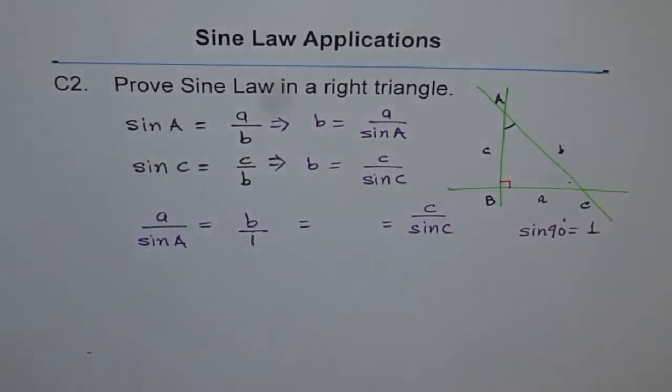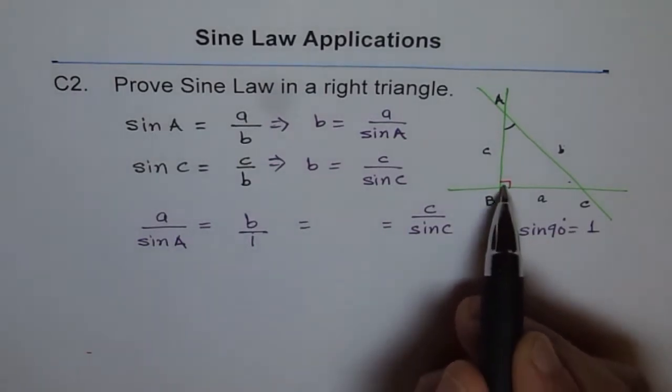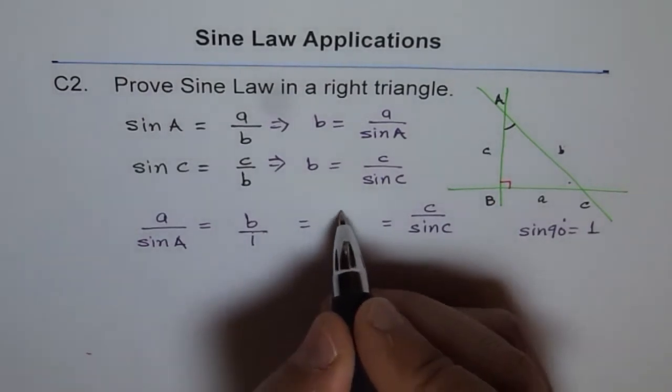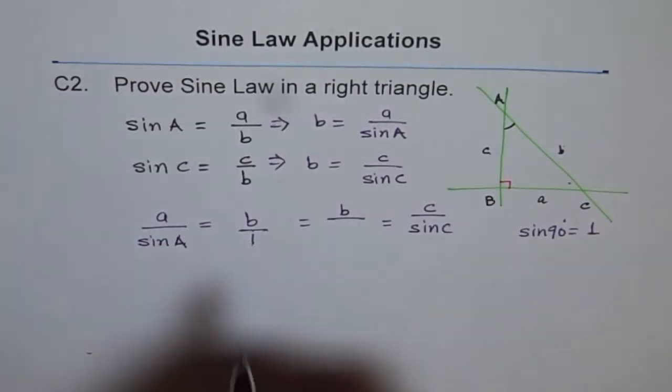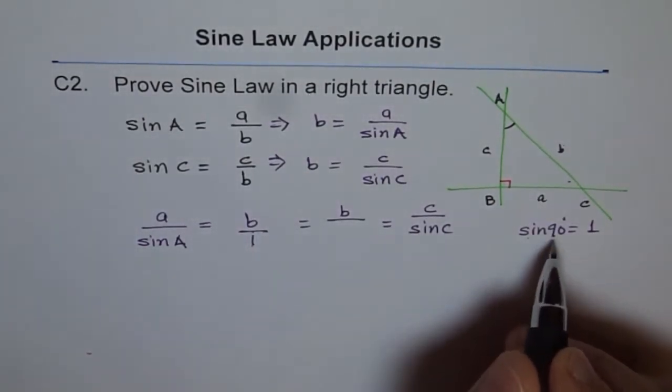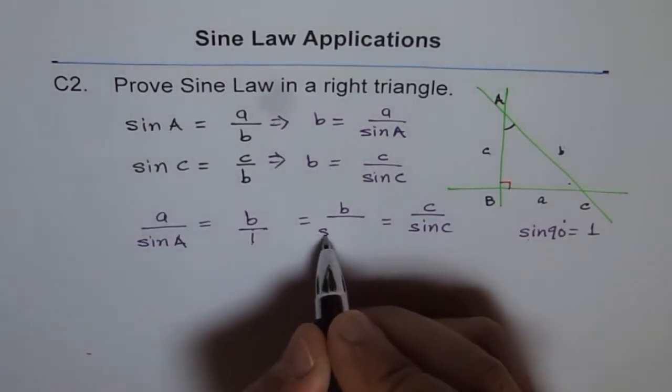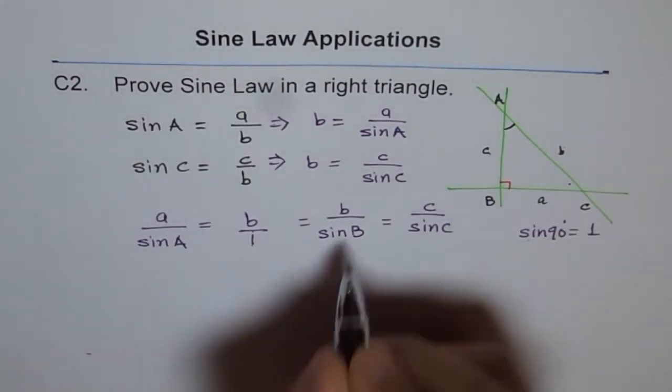So I can always write this as b over 1, and 1 is sin 90, and 90 is b for me, the angle B in a right triangle. So I can write this as b over sin B, instead of 1 I'm writing sin 90, and since my B is 90, why not b?